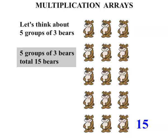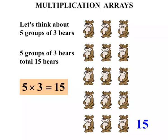Now that's a sentence. We can write that as a number sentence as well. Five groups of three we can write as five times three. The total is fifteen — we can write that it equals fifteen. Five times three equals fifteen. That's a number sentence.